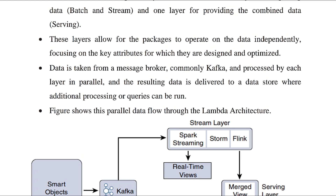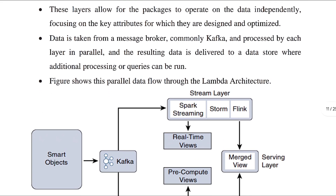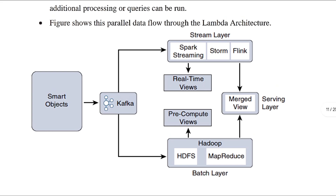The data is delivered to a data store where additional processing or queries can be run. Both the batch and stream layers deliver their processed data to a data store, and you can run queries on that data store. There are three layers in the data management system.